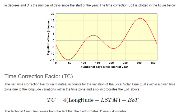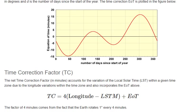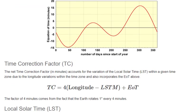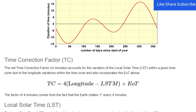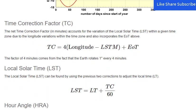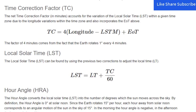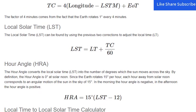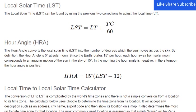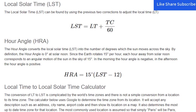Time Correction Factor (TC): the net time correction factor in minutes accounts for the variation of the local solar time within a given time zone due to longitude variations within the time zone, and also incorporates the EOT. The factor of 4 minutes comes from the fact that the Earth rotates 1 degree every 4 minutes. The local solar time can then be found by using these two corrections to adjust the local time.